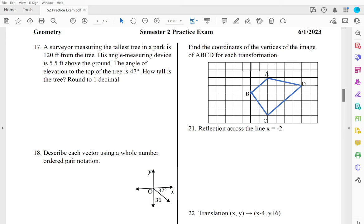Okay, so now we're going to do page 3 and 4. A surveyor measuring the tallest tree in the park is 120 feet from the tree. First we're going to sketch in our tree here. Look at a nice tall tree. And he's standing 120 feet from the tree.